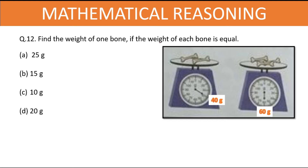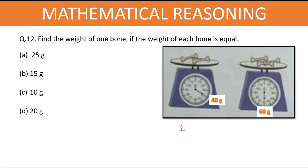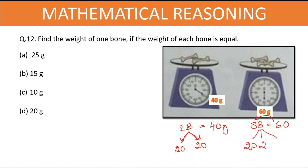Find the weight of one bone if the weight of each bone is equal. On the first weighing scale there are two bones weighing 40 grams, and the second weighing scale has three bones weighing 60 grams. Since the bones are of equal weight, 40 divided by 2 is 20 each, and 60 divided by 3 is also 20 each. So the weight of each bone is 20 grams. The right answer is option D.